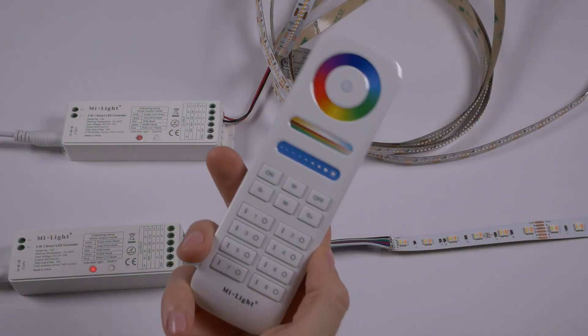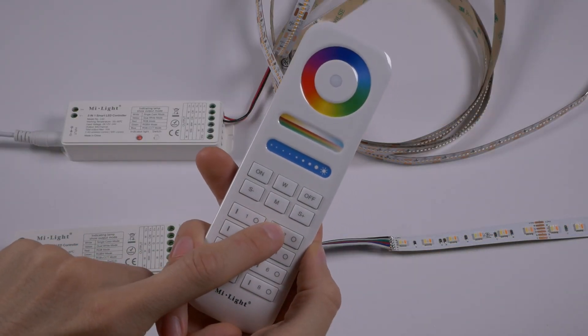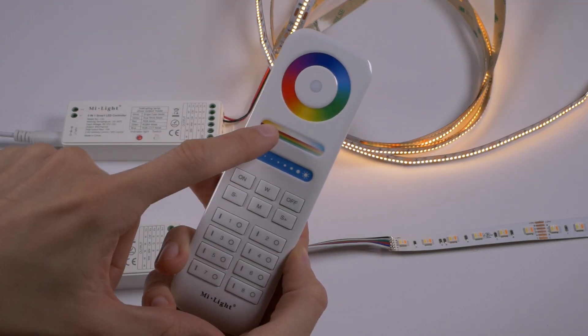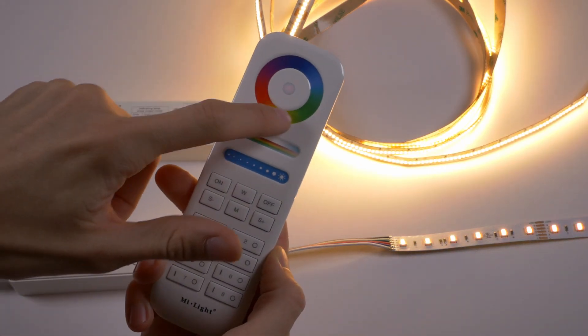Now with everything hooked up, you can make full use of the controls on your remote. With an eight zone remote, you can easily control a combination of white and RGB lights on different zones.